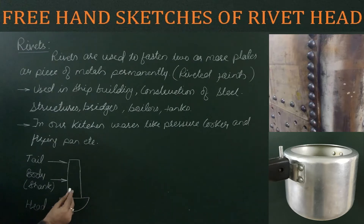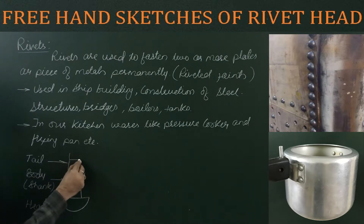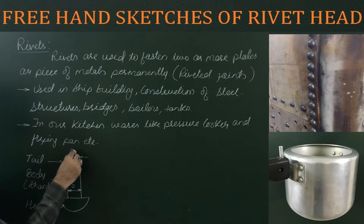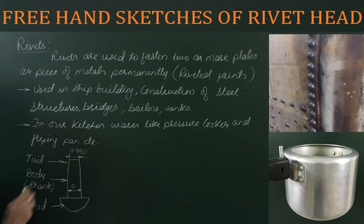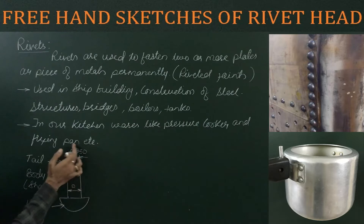A rivet is specified by the diameter of its shank. If this diameter is D (capital D), then the diameter at the tapered tail end will be slightly smaller than D — specifically 0.95 of D. So the diameter at the body or shank is D, and the diameter at the tail end is 0.95D.